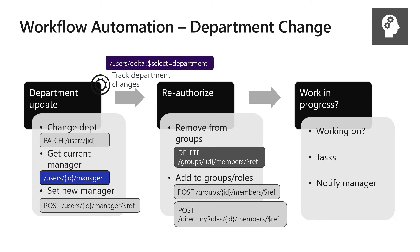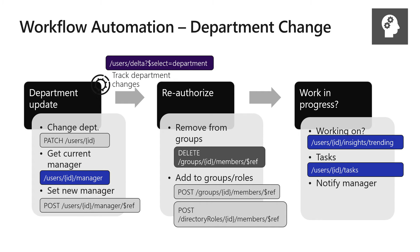You can take this a step further and save time for the user and their manager by automating the handoff of their work to somebody on their old team. You can use insights APIs to see what the user is working on, look at the tasks assigned to them in Planner, bundle it all up, and create an email that goes out to the user's old manager, new manager, and possibly the person taking over their work — with a nice itemized list of tasks with links to detailed plans in Planner, so nothing gets dropped.